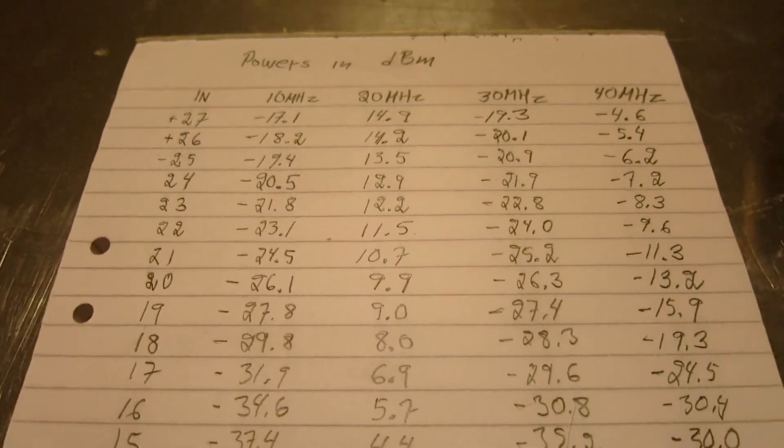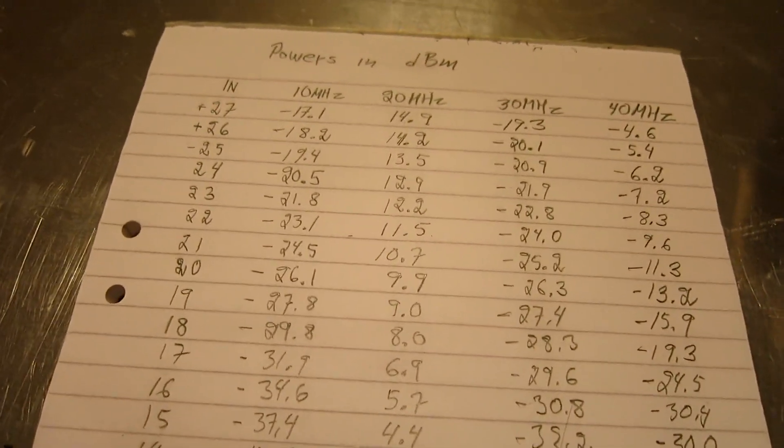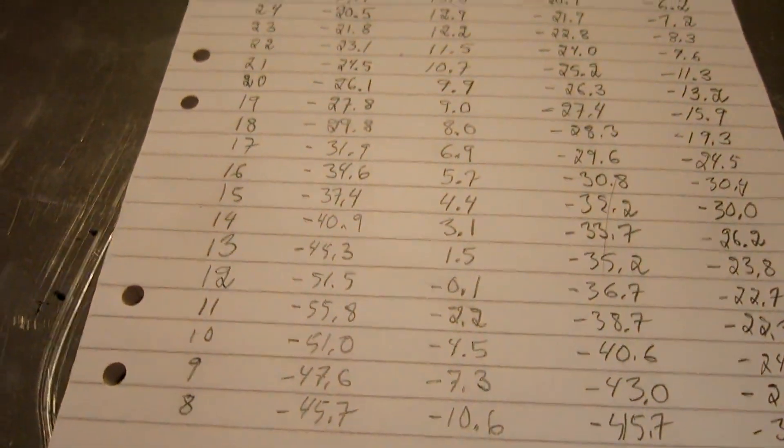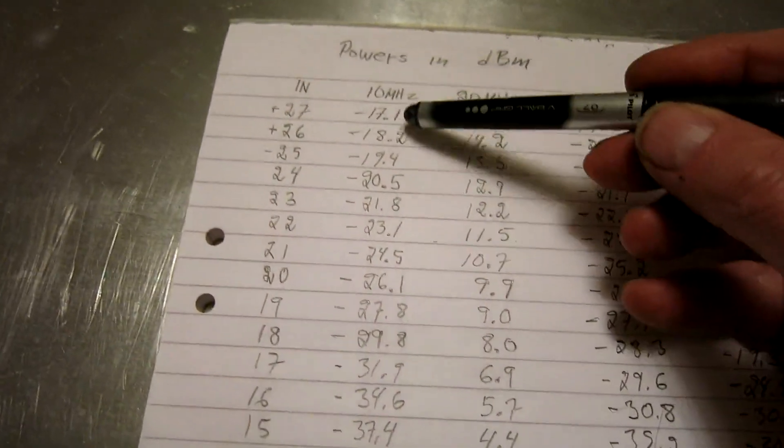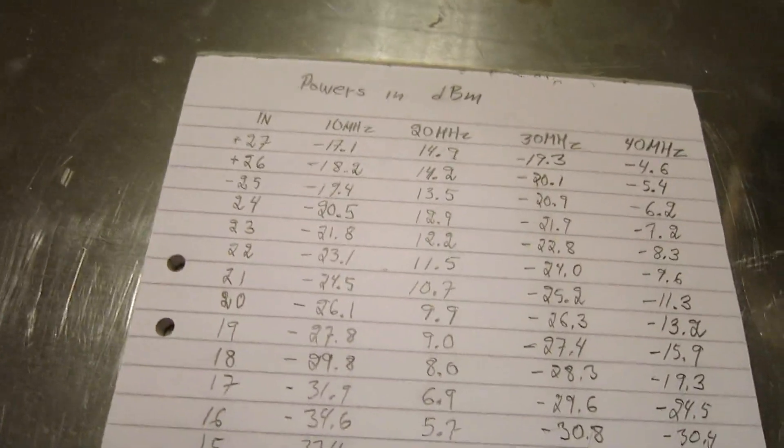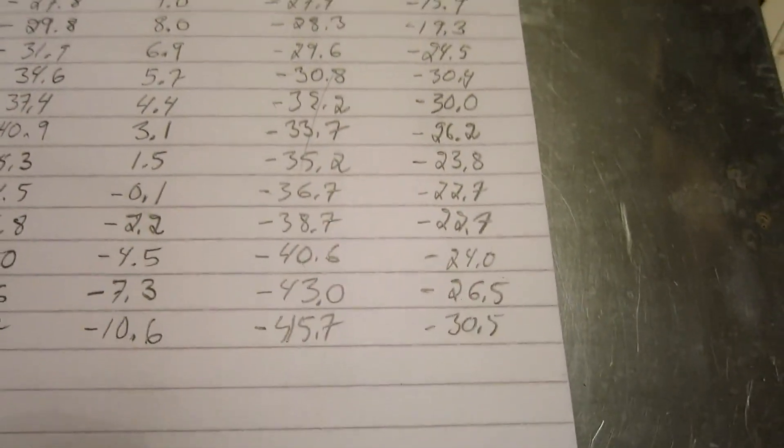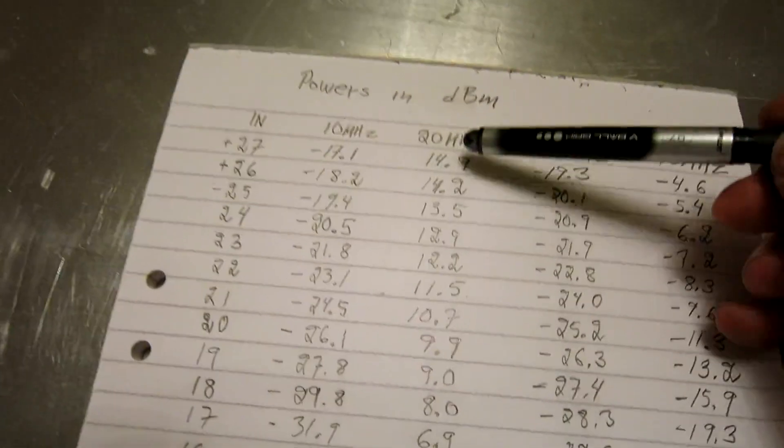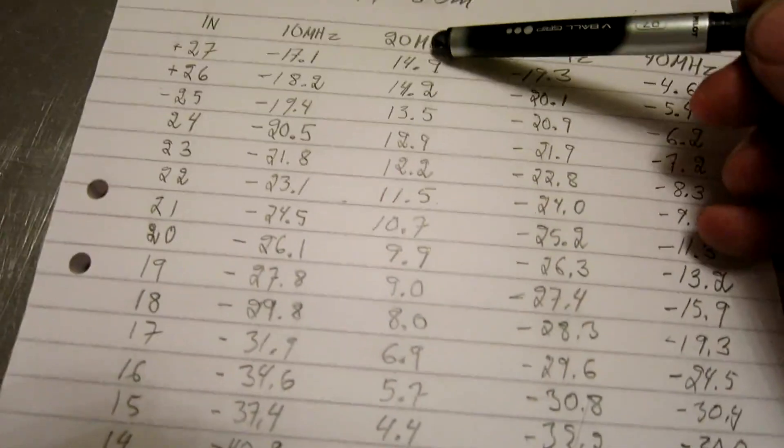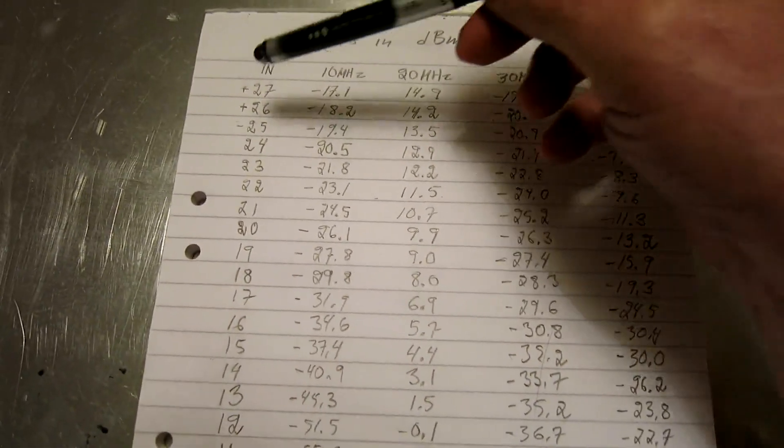So here are the levels of the different frequencies from plus 27 down to plus 8 dBm. The leak through doesn't show anything of interest, and also the higher frequencies look uninteresting. So I don't worry about those. The double frequency looks interesting. I will plot the difference between this column and the input power.